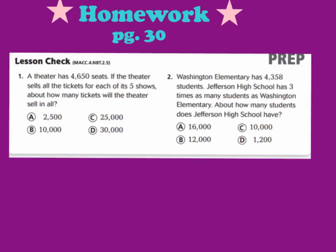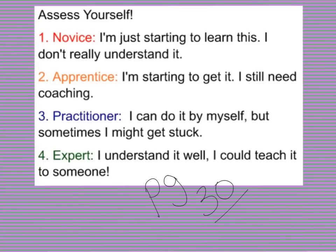All right, friends. Our homework for tonight is on page 30. We are doing numbers 1 and 2. Remember, only number 1 and 2 on page 30. When you finish your homework, remember to assess yourself. Let us know if you are feeling like you're a level 1, novice, level 2, apprentice, level 3, practitioner, or a level 4, expert. Write this down at the bottom of page 30.